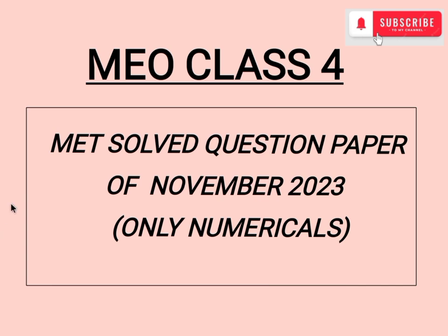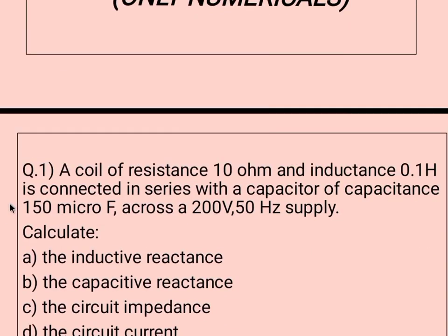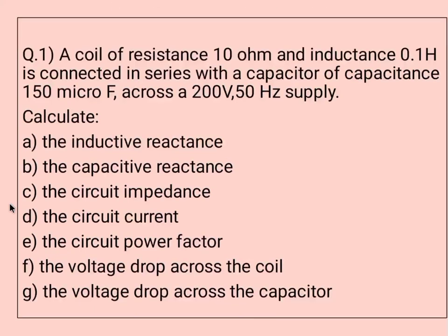Question number one is a very big question but the solution is very easy. A coil of resistance 10 ohm and inductance 0.1 henry is connected in series with a capacitor of capacitance 150 microfarad across a 200 volt, 50 hertz supply. We have to calculate the inductive reactance, capacitive reactance, circuit impedance, circuit current, power factor, voltage drop across the coil, and voltage drop across the capacitor.